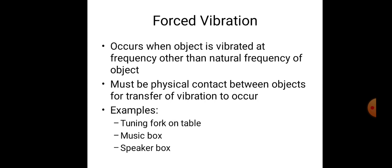There must be physical contact between the objects for the transfer of vibrations to occur. Examples include a tuning fork on a table, a music box, and a speaker box. So in forced vibrations, physical contact between objects is required for vibration transfer, and some external force is needed.